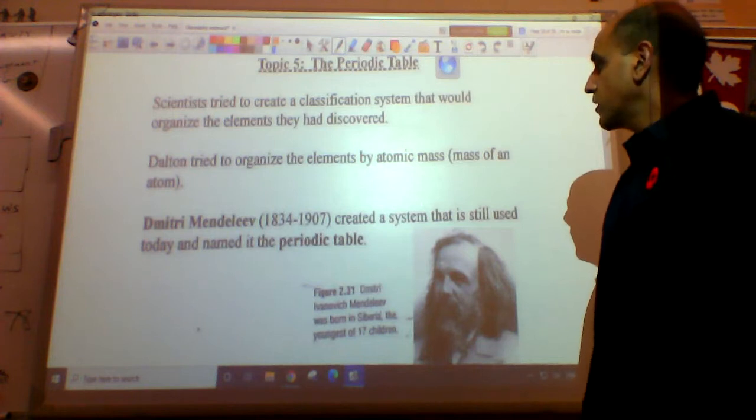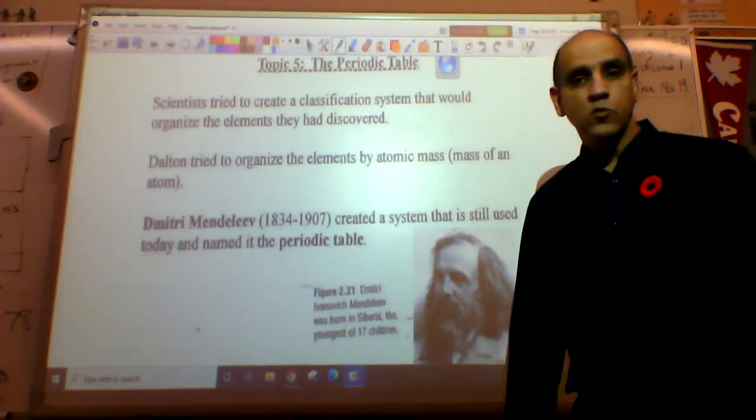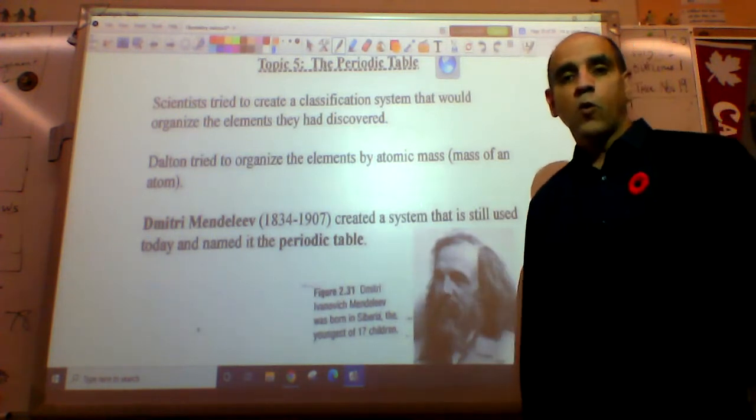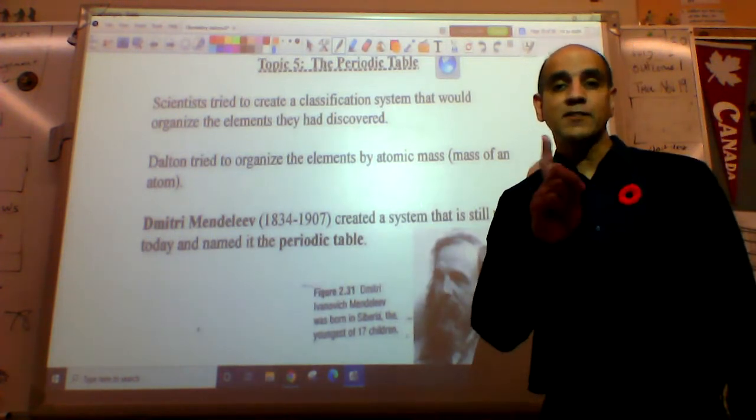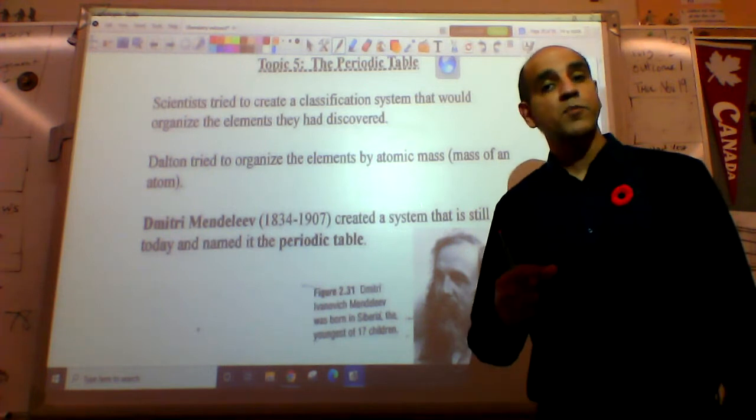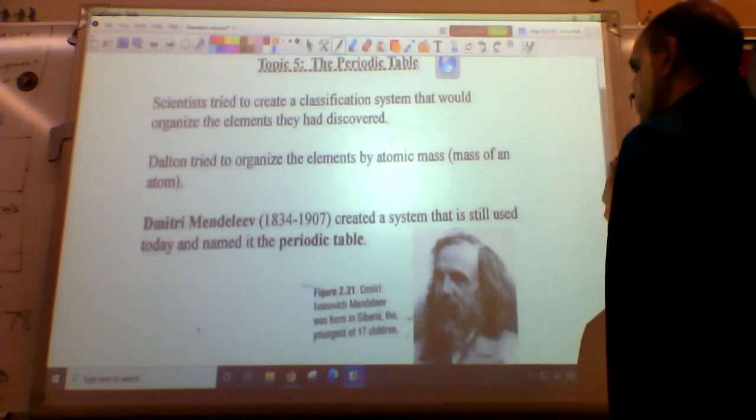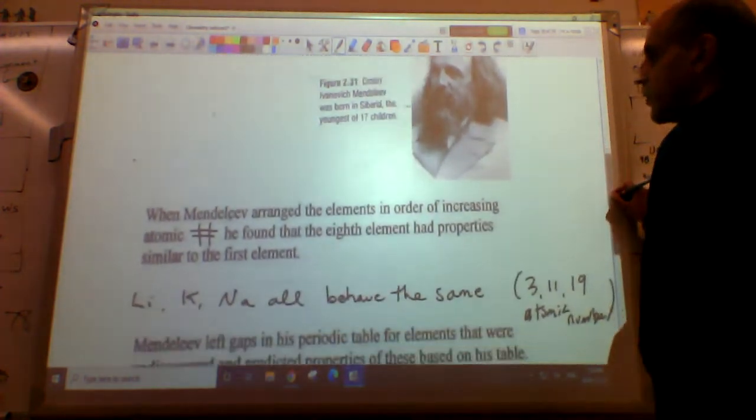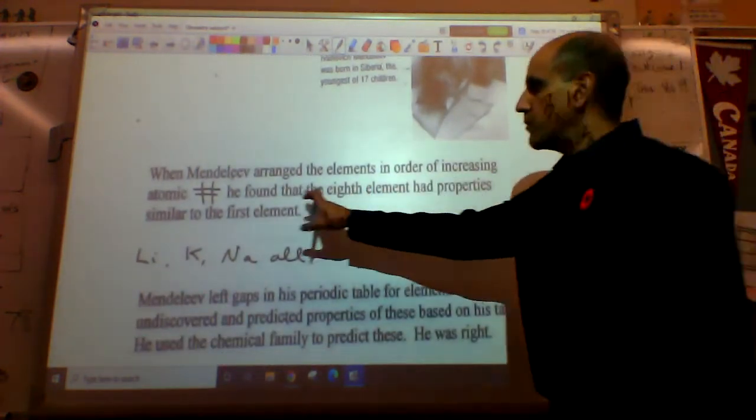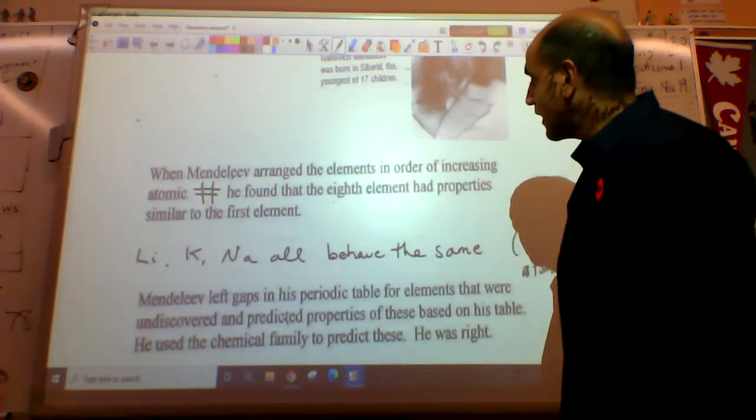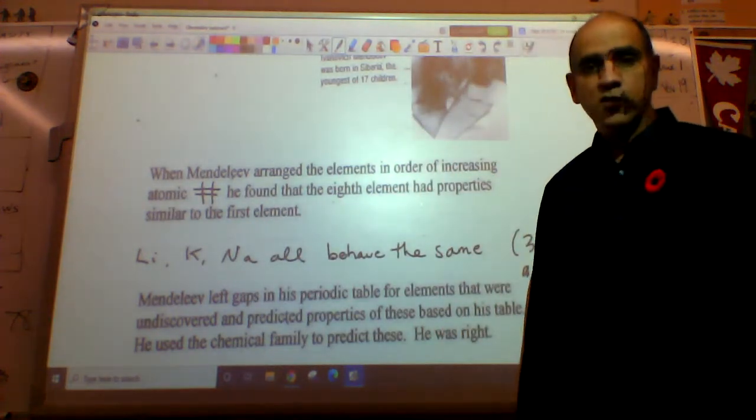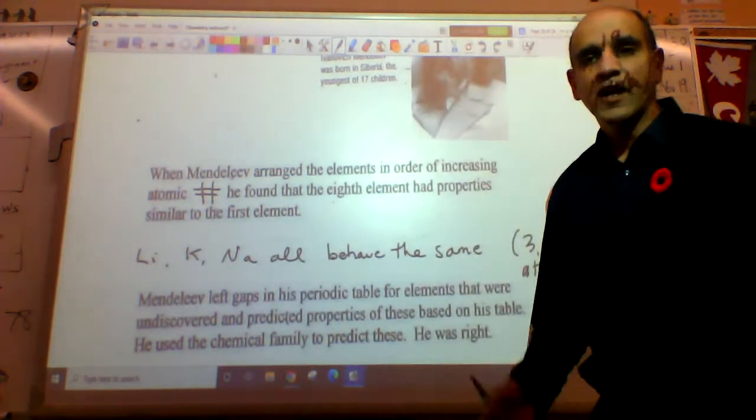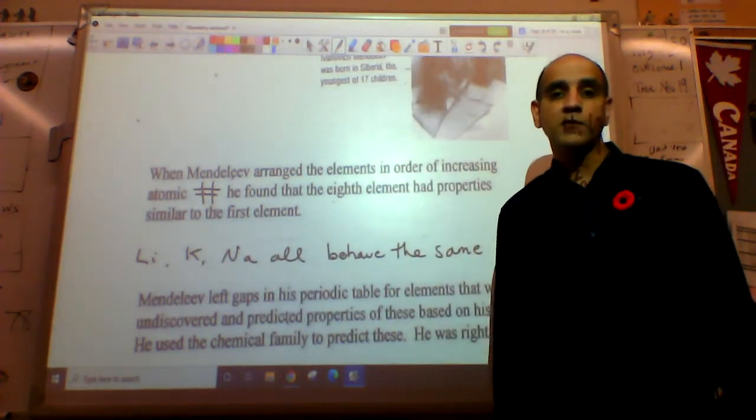Dalton tried to organize the periods by atomic mass. It didn't work. Dimitri Mendeleev, the youngest of 17 children, organized them by atomic number and this time it did work. They were able to make predictions with it as well. Classic chemist - giant forehead.